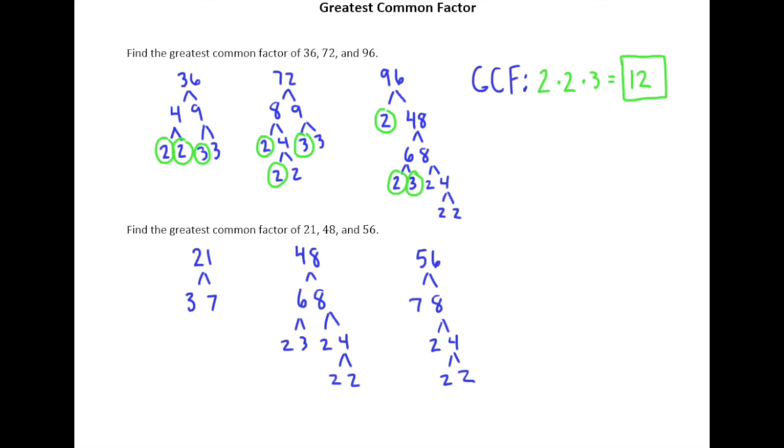So you might want to try to circle 3's everywhere, 21's got a 3, 48's got a 3, 56 does not. You might want to try to circle 2's, 56 has a 2, 48 has a 2, 21 does not.